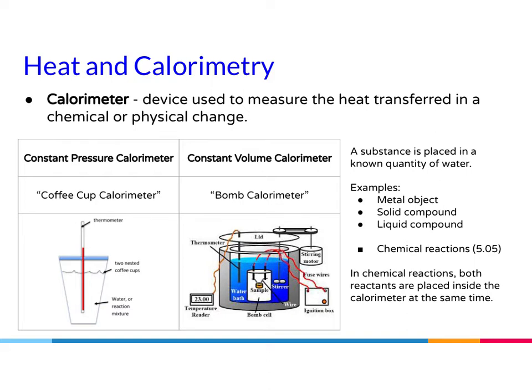A calorimeter is a device used to measure the heat transferred in a chemical or physical process. There's a coffee cup calorimeter, which is a constant pressure calorimeter, and you're looking at the temperature change. And then there is what we call a bomb calorimeter, which is a constant volume calorimeter. A substance is placed in a known quantity of water — so you know the mass of the water — and you put in either a metal object, a solid compound, or a liquid compound, and then measure what happens to the water. Or you can complete a chemical reaction inside a calorimeter and see what happens to the change in temperature.